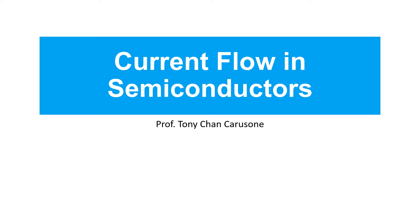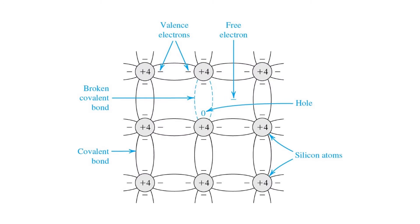In this video, we'll learn about current flow in semiconductors. Current flows in semiconductors when there's a net movement of charge carriers. There are two types of charge carriers: electrons carry negative charge, and holes carry positive charge.